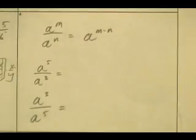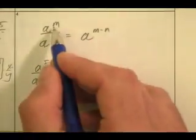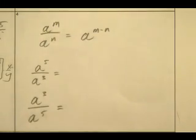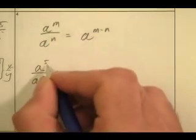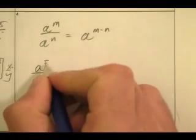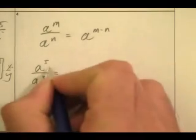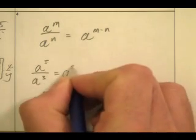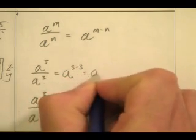We have these rules for quotients. You know, a to the m over a to the n is a to the m minus n. Well, no duh. Well, think about it. a to the fifth over a to the third. If I did this a to the fifth minus a to the third, or I do 5 minus 3, I get a to the 5 minus 3, which is a squared.